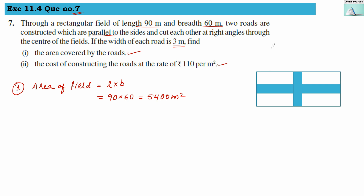Second, we find the area of the roads. Let us take the vertical road first. This vertical road has a length the same as the breadth of the rectangular field, that is 60 meters, and it is 3 meters wide. So length and breadth are 60 and 3.